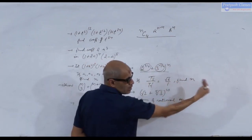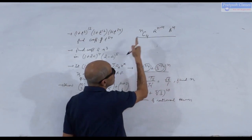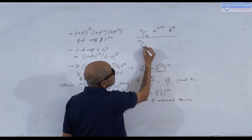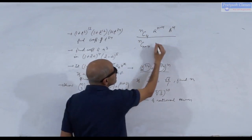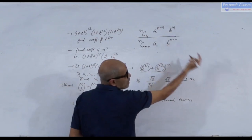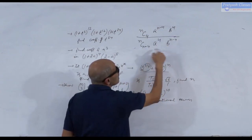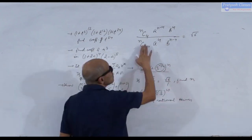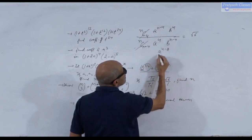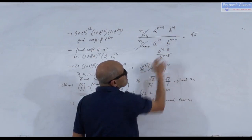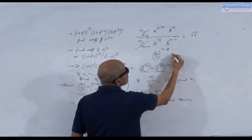The 5th term from the back: its binomial coefficient nC(n-4) equals nC4, which cancels with the numerator. So after cancellation, the ratio simplifies to a^(n-4)/b^(n-4) × a⁴ type arrangement, giving (a/b)^(n-8) = √6. Here a = 2^(1/4) and the reciprocal of b = 3^(-1/4) is 3^(1/4), so a/b effectively gives 6^(1/4).